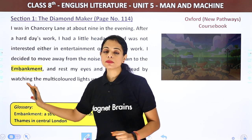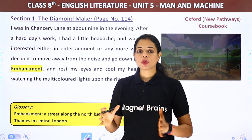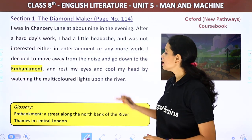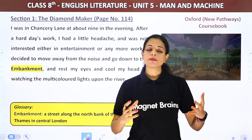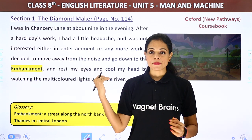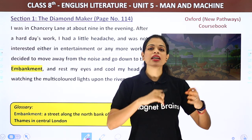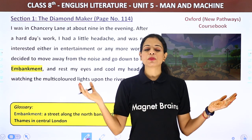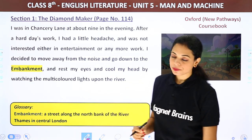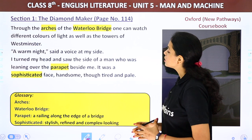He went to the embankment — the street along the Thames river in central London, where there is a bridge. He wanted to rest his eyes and cool his head by watching the multicolored lights upon the river. There was a beautiful light show there, and you could see the whole city. At nine o'clock at night, standing on a bridge where the city is visible, it feels like so many stars are spread out.